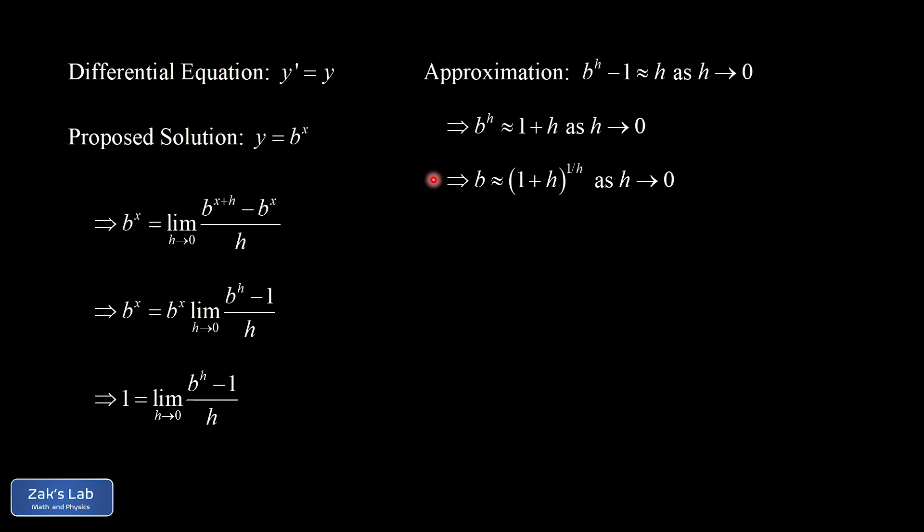Now this allows us to re-express b as a limit. Again, that approximation was valid, provided h was very close to 0. So we could just say b is equal to the limit as h goes to 0 of 1 plus h, all raised to the 1 over h power. So at this point, we've solved for the mystery base that it takes to solve the differential equation, y prime equals y.